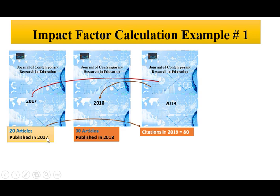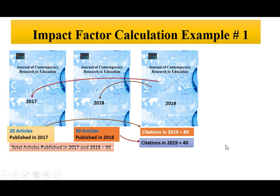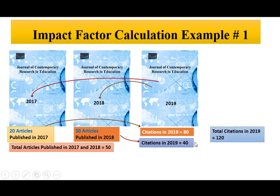We also need the citation counts. How many times were the 2017 articles cited in 2019? For example, there were 80 citations — meaning in 2019, papers published in 2017 were cited 80 times. For 2018 papers, citations in 2019 were 40. So total articles published in 2017 and 2018 were 50 (20 plus 30), and total citations in 2019 were 120 (80 plus 40).